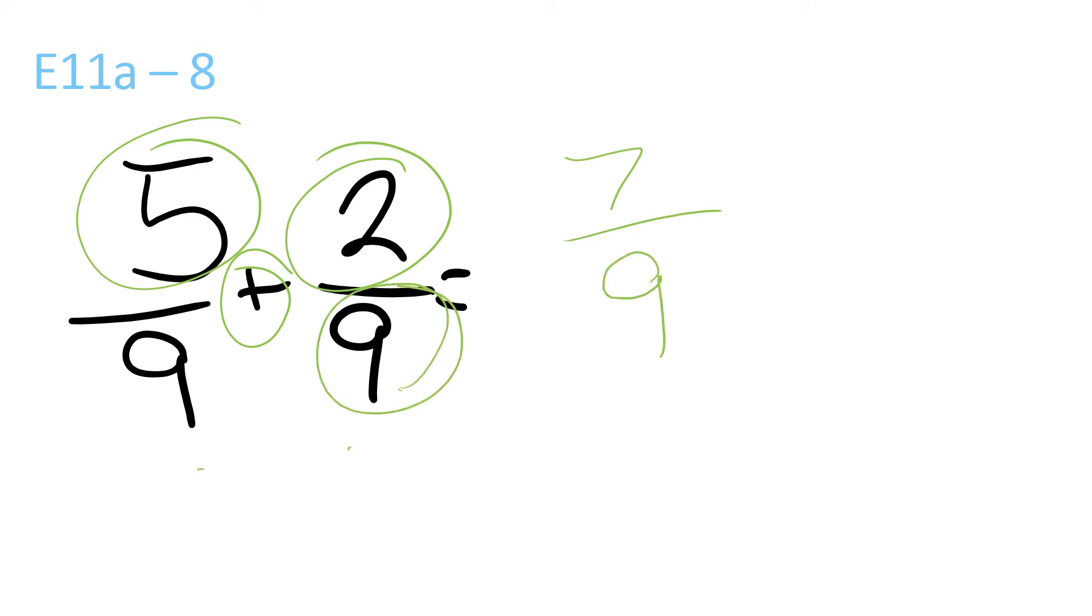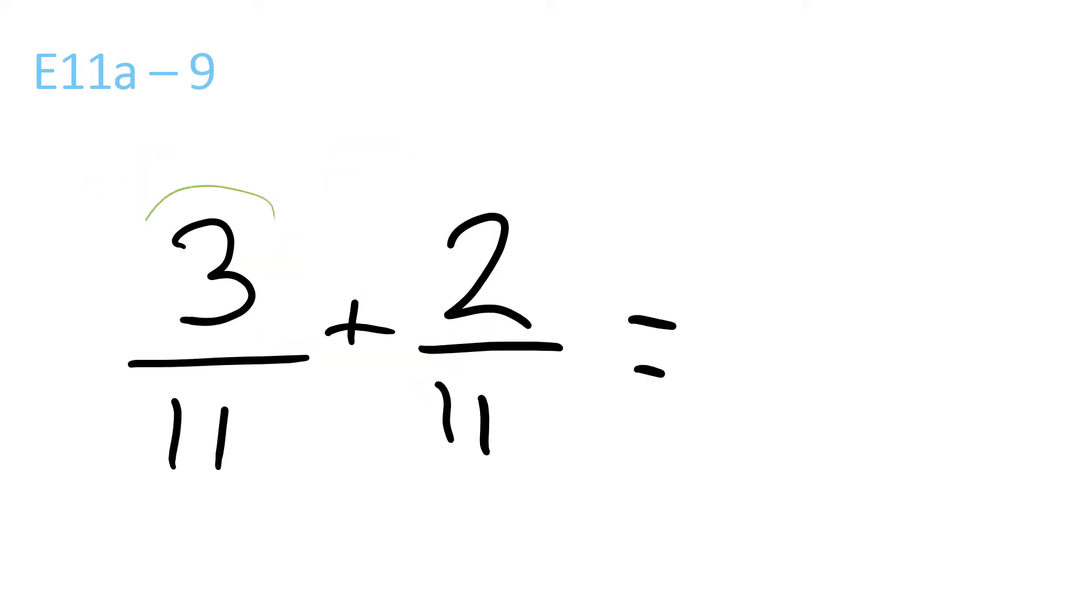You don't do 9 plus 9, you just keep the 9 there. You only plus the top one. So 3 plus 2 equals 5 over 11.